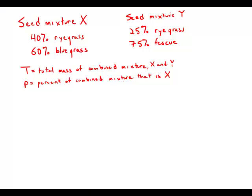Seed mixture X is 40% ryegrass and 60% bluegrass by weight. Seed mixture Y is 25% ryegrass and 75% fescue. If a mixture of X and Y contains 30% ryegrass, what percent of the mixture is made of seed from mixture X?